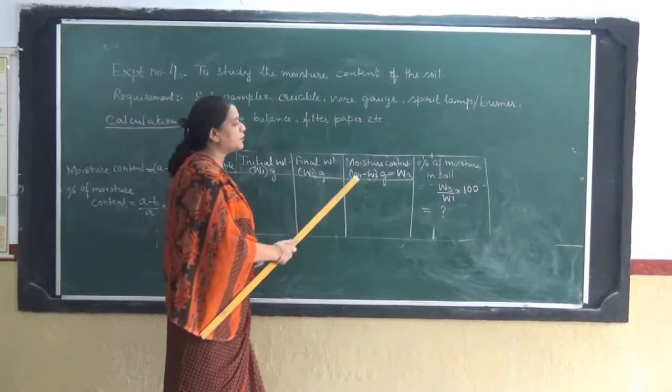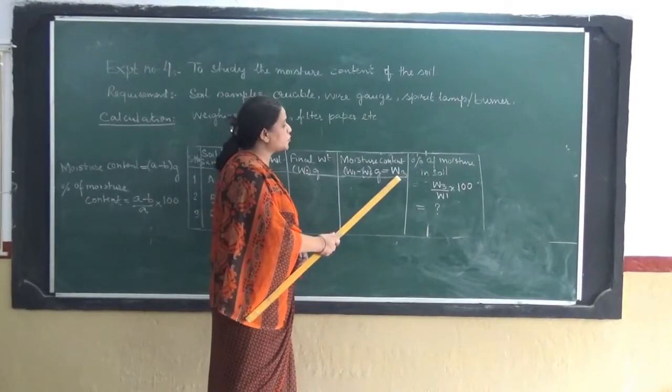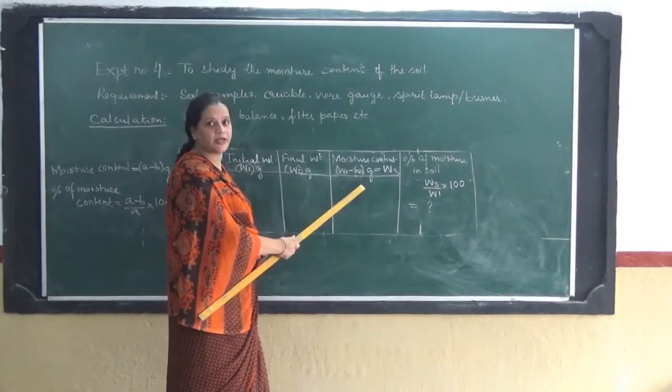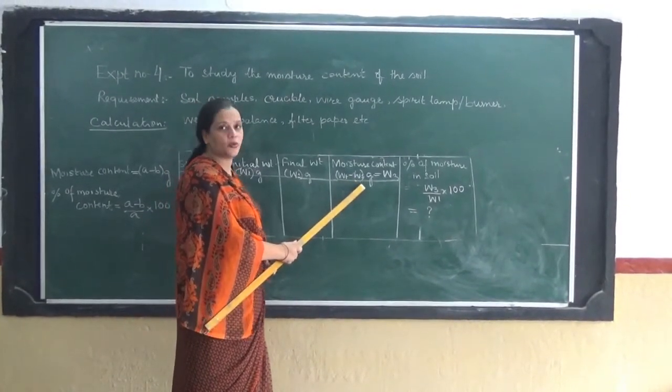Now to find out the actual weight of the moisture we have to calculate by subtracting the initial weight and the final weight, that is W1 minus W2.